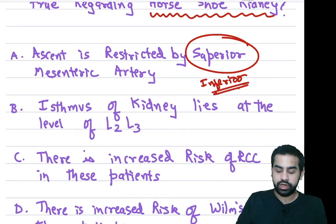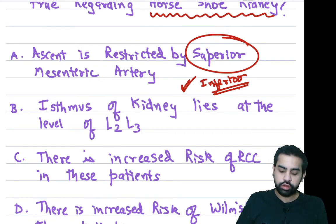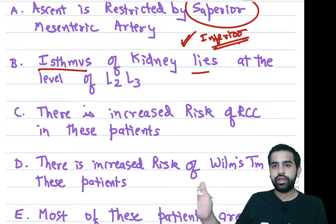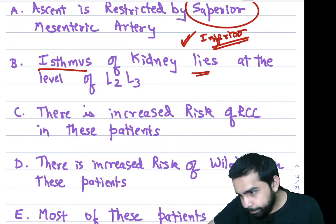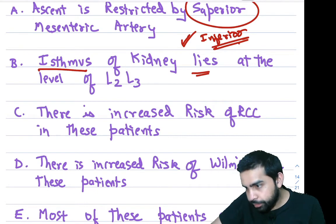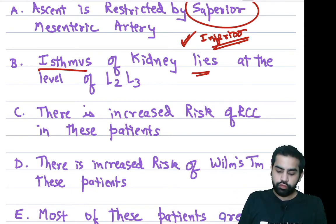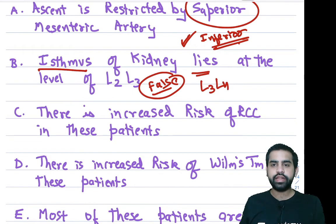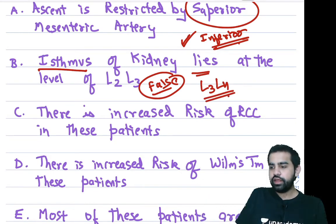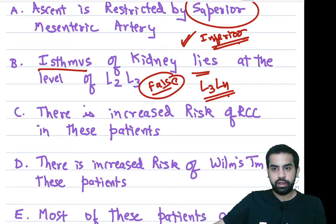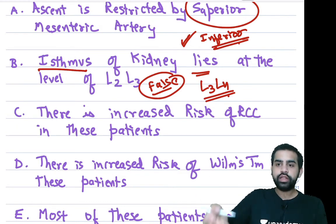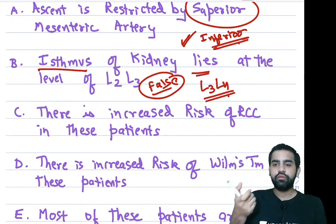Horseshoe kidney is a condition where the lower poles of both kidneys are fused together. During embryological development, the kidneys ascend from the pelvis into the abdomen. However, because of this fusion, the ascent is arrested by the inferior mesenteric artery. The isthmus lies at the level of L3-L4. Both of these are very important exam points.